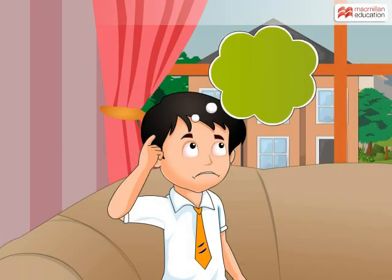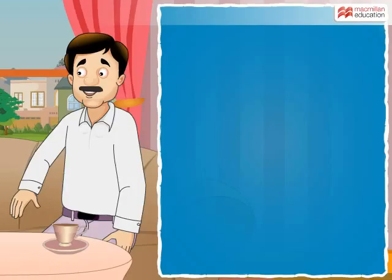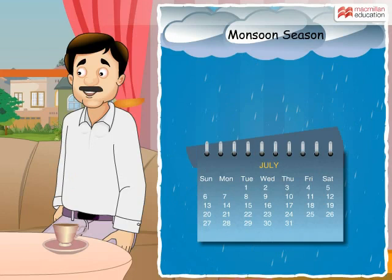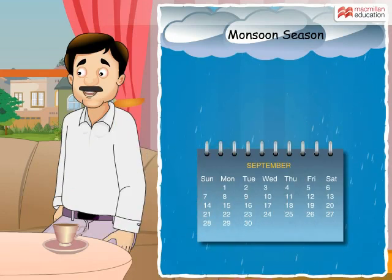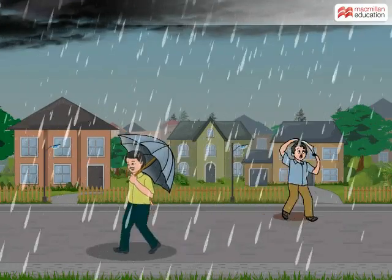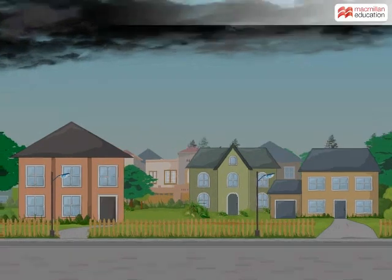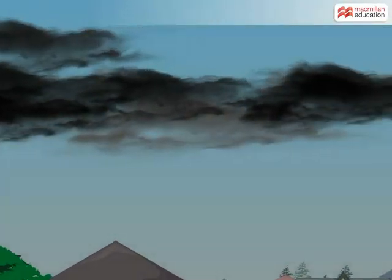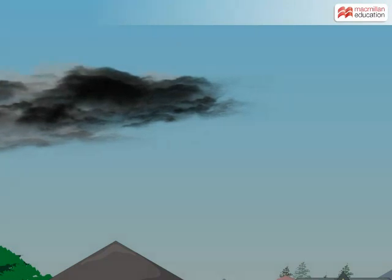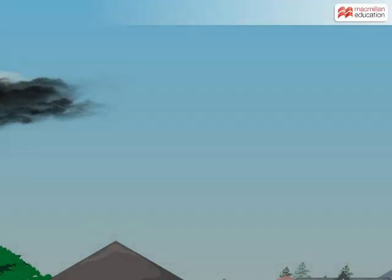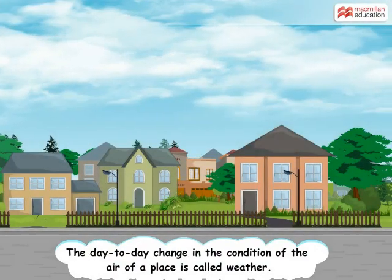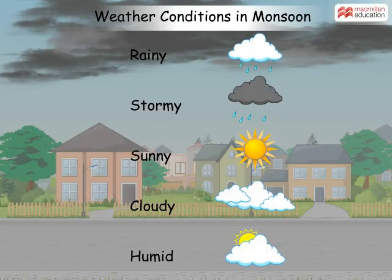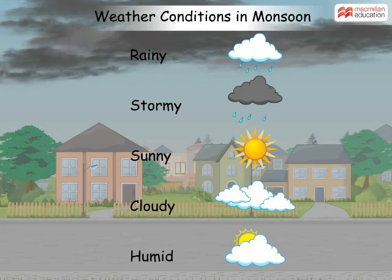Let me explain. Monsoon season starts from June and it lasts till September. During this period it rains a lot, therefore we always carry our umbrellas wherever we go. The sky is mostly overcast with clouds, but sometimes the sky can be clear too and it can be warm and humid like it is today. This day-to-day change in the condition of the air of a place is called weather, and in a rainy season we can experience different weather conditions.